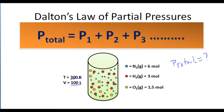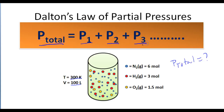According to Dalton's law of partial pressures, the total pressure in this container will be equal to the pressure exerted by the nitrogen gas, plus the pressure exerted by the hydrogen gas, plus the pressure exerted by the oxygen gas. Dalton's law of partial pressures tells us that the total pressure of a gas held in a container is equal to the sum of all the pressures of all the gases in that container.